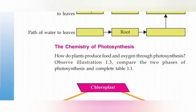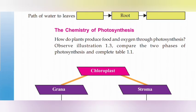This is not just a science assignment. We will study the steps of photosynthesis. Now let's look at this: How do plants produce food and oxygen through photosynthesis? Observe illustration 1.3, compare the two phases of photosynthesis and complete table 1.1. The main item is the two stages of photosynthesis — how do you use chloroplasts, their structure and so on.